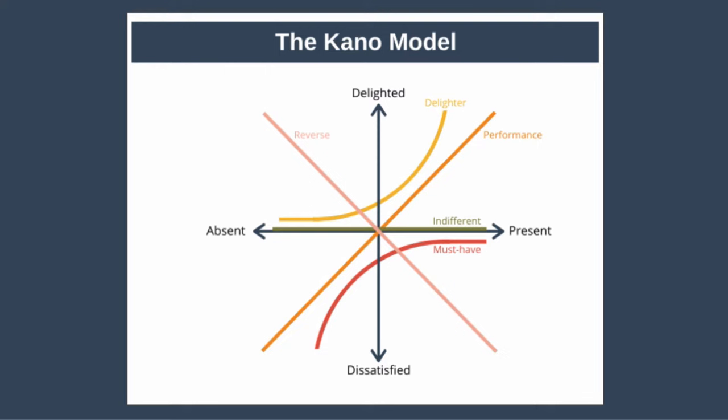Firstly, must-have features. These are the features that customers expect as part of a product or service — they represent your customer's basic requirements. If they are present, your customer won't be delighted in any way; they'll be neutral. But if even one must-have feature is absent, your customer will be very dissatisfied. For example, imagine arriving at a hotel room and locking the door. If you lock it successfully, you don't even think about it — it's just what you expect. But if there's no door lock, you'd be absolutely horrified. Your product must have all must-have features, but having them will not delight your customer, which is why the red must-have line never goes above the horizontal axis.